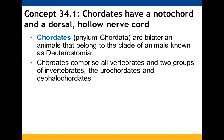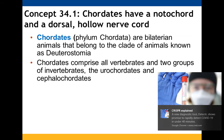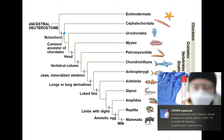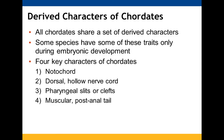Chordates are bilaterian animals that belong to the clade Deuterostomia. They include all vertebrates along with two groups of invertebrates: the urochordates and other deuterostomes. There's the breakdown of deuterostomia. Derived characters that all chordates have in common — some of them you do not see in their adult morphology features, and they're present only in the embryonic stage.